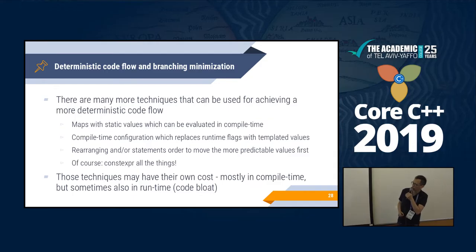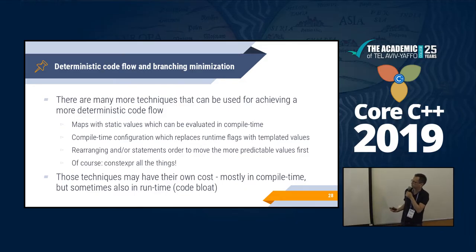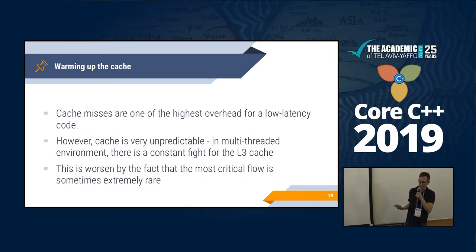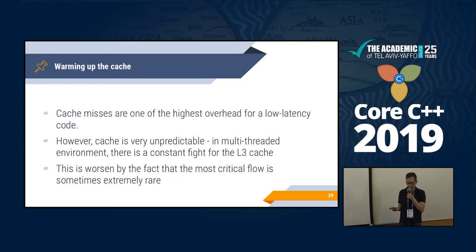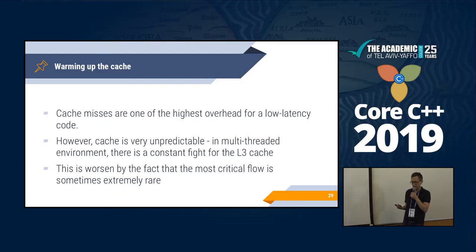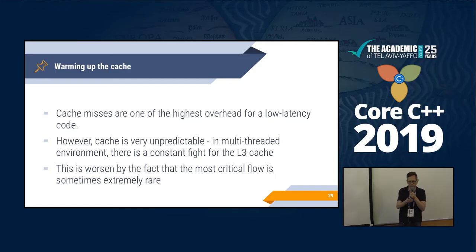Moving on, I'll talk about warming up the cache — this is important because it's something not a lot of systems do. Cache misses are very, very expensive. In low-latency code, getting something into the cache costs a lot of time. We need to complete our real-time flow in a few microseconds — four or five. L3 cache misses are even worse because the L3 cache is often shared between different cores running on the same CPU, so those cores are constantly fighting for it.